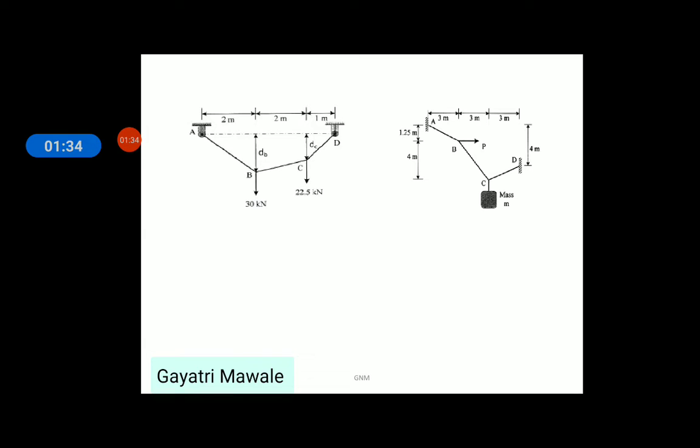At B and C point, two vertically downward forces of 30 kN and 22.5 kN are acting at B and C point respectively. Vertical distance DB is called as sag of point B and vertical distance DC is known as sag of point C.